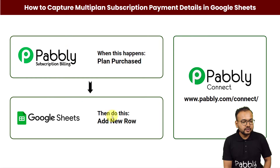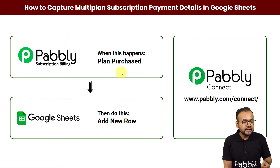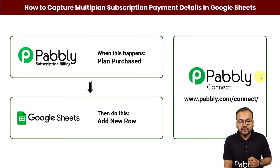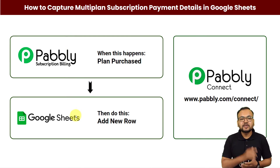This will be the flow of this automation. We are using Pabbly Subscription Billing to sell subscription plans. As and when any plan gets purchased for any product, the details of that plan will be added in a new row in a particular Google Sheet automatically. This will save your manual efforts, save your time on repetitive tasks, and improve your productivity. We are using Pabbly Connect to make the connection between Pabbly Subscription Billing and Google Sheets, and anyone can set up this automation without any coding skills.